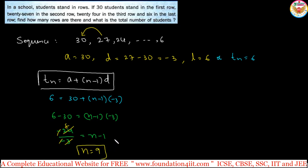The question asks for the total number of students. We got n equals 9, so we need to find S9, the sum of 9 terms. The formula is Sn equals n/2 times [2a plus (n-1) times d].